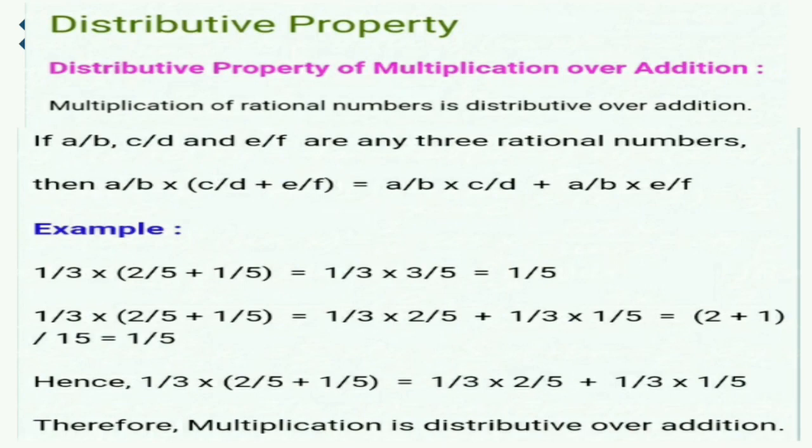Example: 1 upon 3 into (2 upon 5 plus 1 upon 5). First, add inside the bracket: 2 upon 5 plus 1 upon 5 equals 3 upon 5. Then multiply: 1 upon 3 times 3 upon 5 equals 1 upon 5. Or distribute: 1 upon 3 times 2 upon 5 equals 2 upon 15, plus 1 upon 3 times 1 upon 5 equals 1 upon 15, giving 3 upon 15 which equals 1 upon 5. Both methods give the same answer.